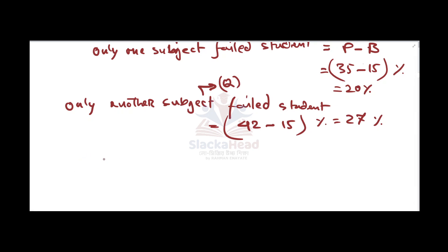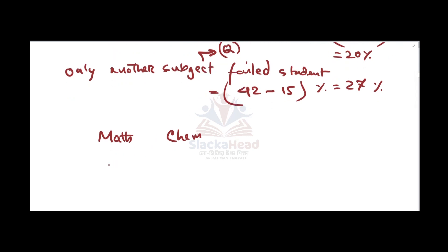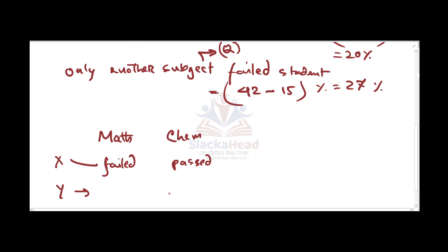Now we apply logic. Say there are two subjects: mathematics and chemistry. If Mr. X failed only in mathematics, he must have passed in chemistry. Similarly, if Mr. Y failed only in chemistry, he must have passed in mathematics. So if 20% failed only in subject P, they must have passed in subject Q.